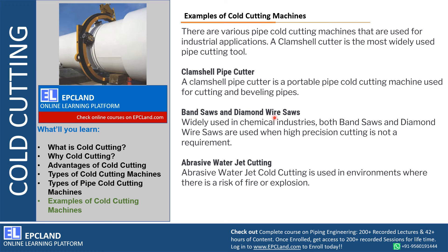Band saws and diamond wire saws are also widely used in the chemical industry, and most of the time these are used where high-precision cutting is not a requirement. Another type is abrasive water jet cutting, which is used when there is a risk of fire and explosion — in that kind of hazardous environment, abrasive water jet cutting is the preferred option.